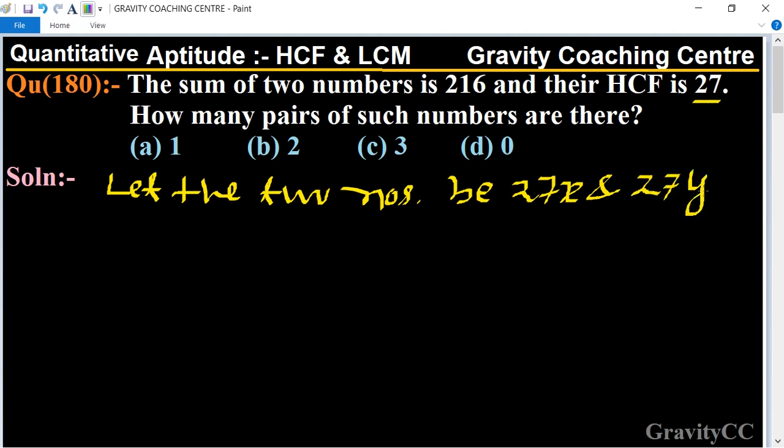According to the question, their sum is given as 216. So 27x plus 27y equals 216.